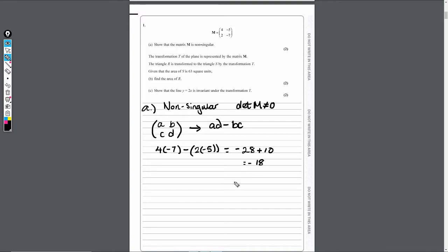Because this now, this is the determinant of M, so determinant M is equal to minus 18, therefore M is non-singular, because we've shown that the determinant is not equal to zero. And there we have it, so that's part A.